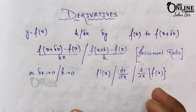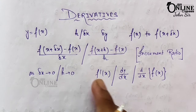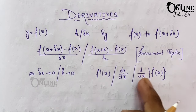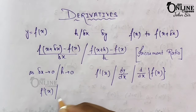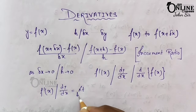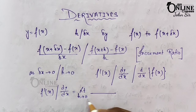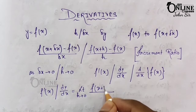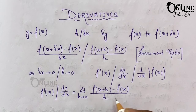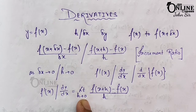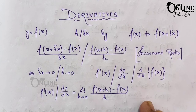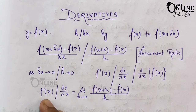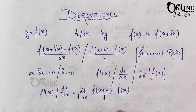The derivative of f at point x is denoted by f'(x), or dy/dx, or d/dx f(x). Thus f'(x) = dy/dx = limit as h tends to zero of [f(x+delta x) - f(x)] / h, provided the limit exists. If f'(x) exists then we say that f(x) is differentiable at x.